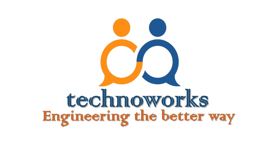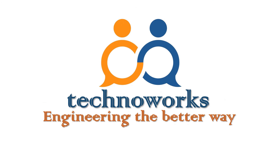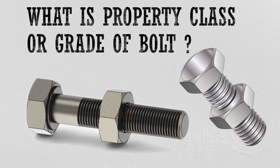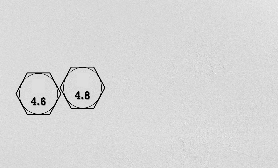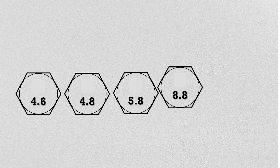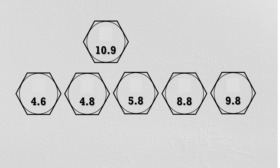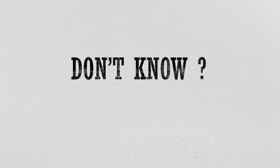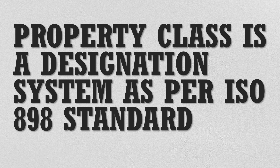Do you know what is the bolt property class or bolt grade? You might have seen in metric bolts the heads of bolts are marked with some number — what does it tell us? If you really don't know, this information will help you. Property class is a designation system which is used to define the strength of metric fasteners.